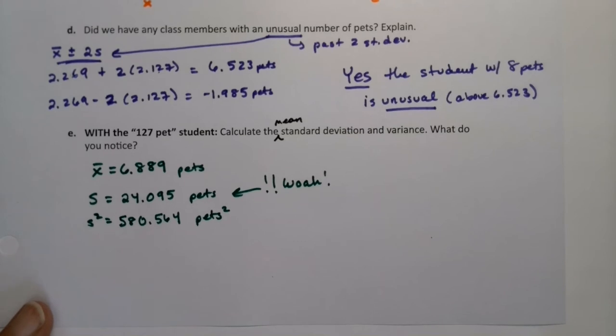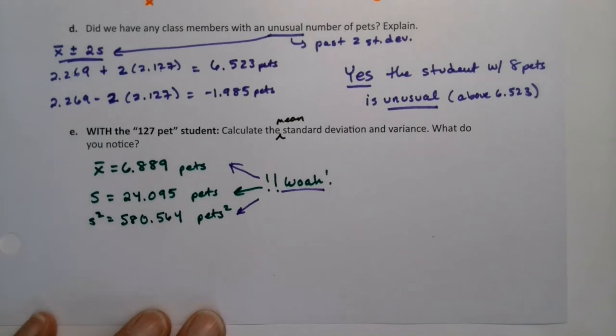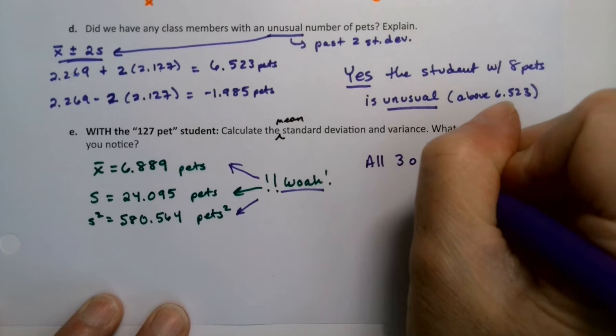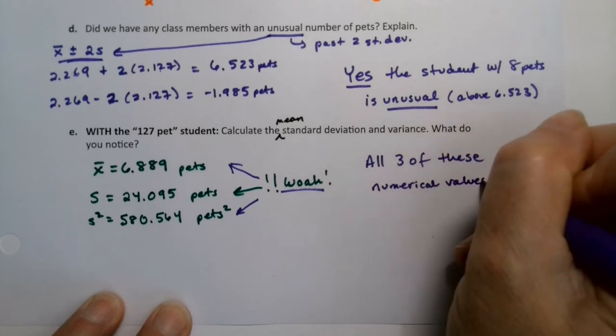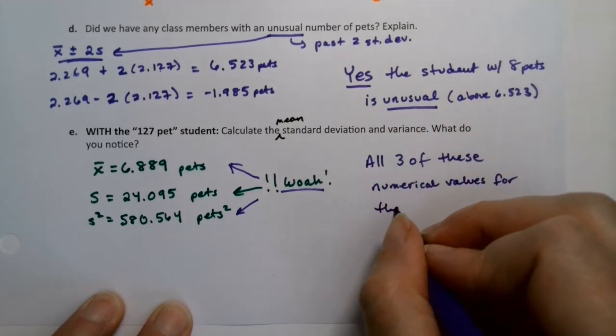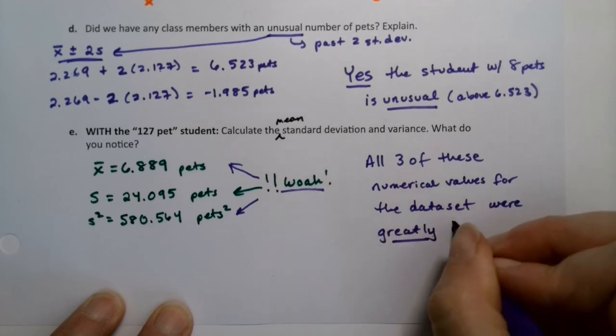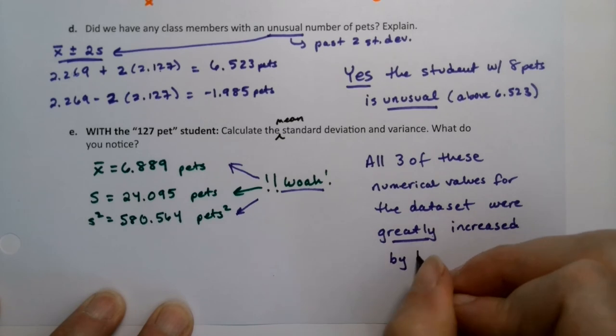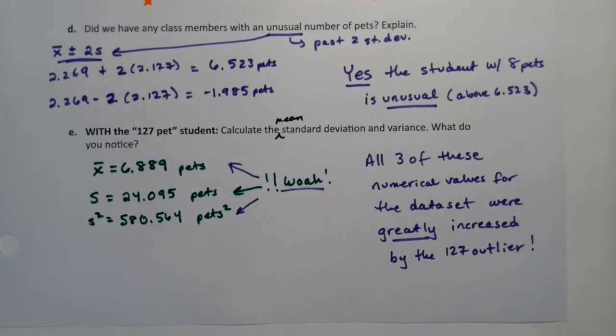And the unit for that would be pet squared, which again has no interpretation value. Now, what do we notice? That's why we're doing this. Actually, it's whoa on all of them. They all got really, really large just with one outlier. So we're noticing that all three of these numerical summaries were greatly increased by the outlier. And that leads us to the idea of resistance.